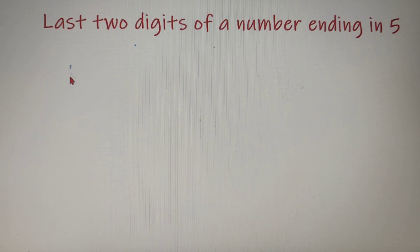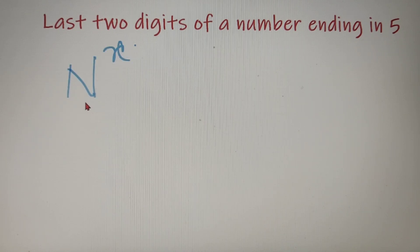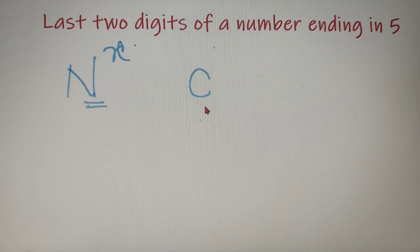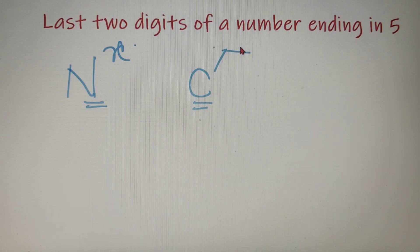So suppose you are given a number n raised to any arbitrary power x. We know that the number ends in 5, and let's say the second last digit of this number is equal to c. We can find out the last two digits of this number with the help of the second last digit c.